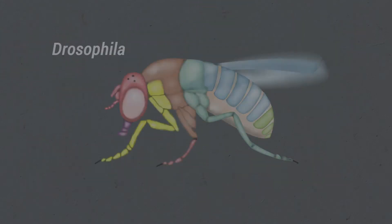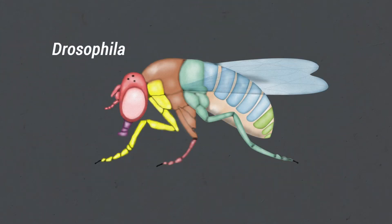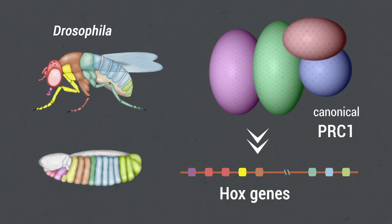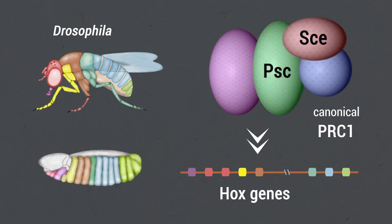In Drosophila, Hox gene expression is regulated by canonical PRC1, which is composed of Sex combs extra, Posterior sex combs (PSC), and two proteins that are specific components of this complex: Polyhomeotic and Polycomb.